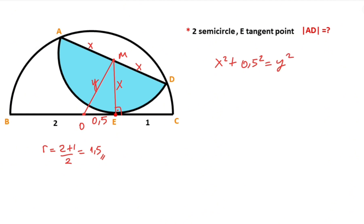Next step: notice that here is the center point and these two parts are equal, which means this angle here must be equal to 90 degrees. This is because the perpendicular drawn from the center to the chord bisects the chord. After that, if we connect point A and point O, this length is also a radius, so it equals 1.5.